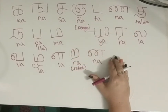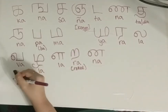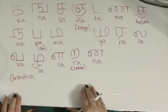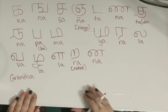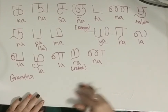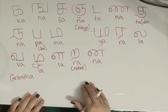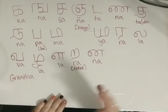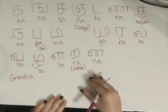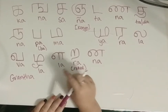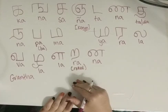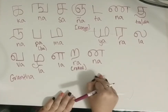Now we move on to a special section called the Grantha letters. These letters were added later to the language because they're based on sounds and letters from other Indian languages, in order to say words and sounds from those other Indian languages. They're not part of the original Tamil alphabet. With a dot on top they make a completely different sound — I didn't have the time or energy to dive deeper into that, but it will be covered in part two. For now we're just going to learn the no-dot version.